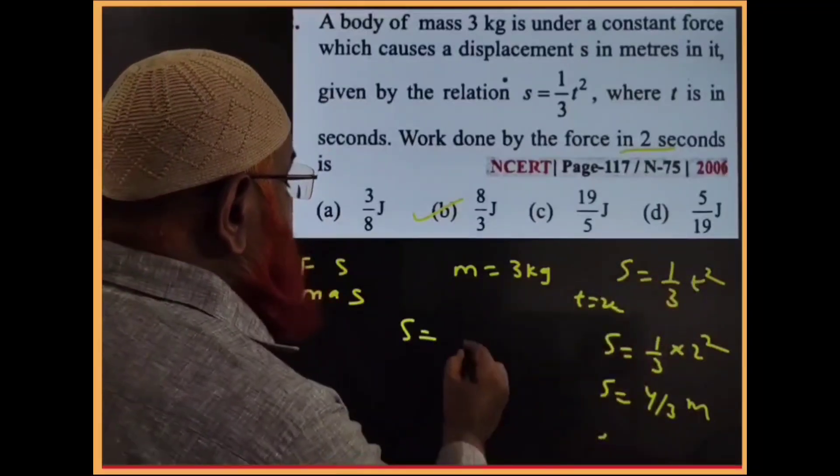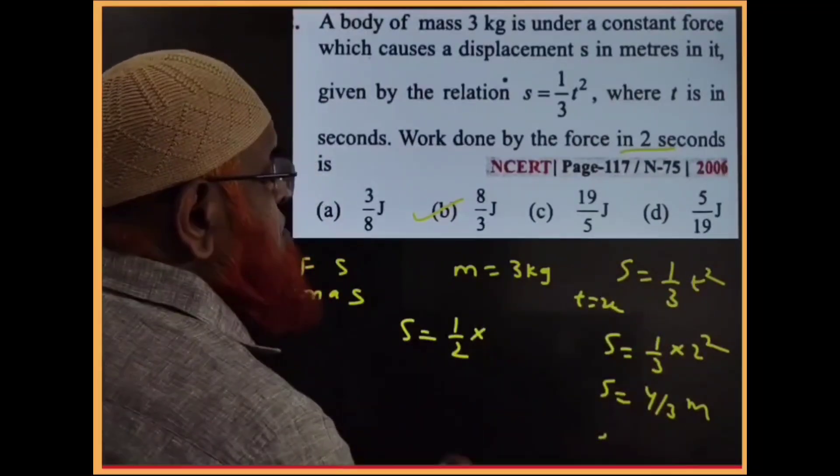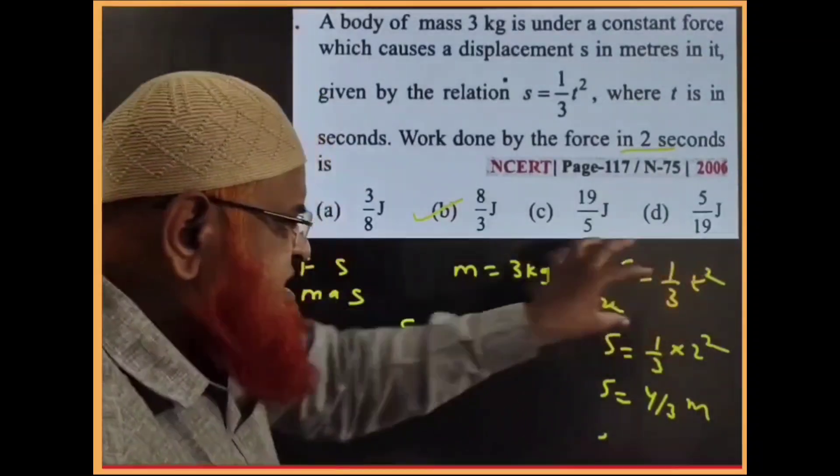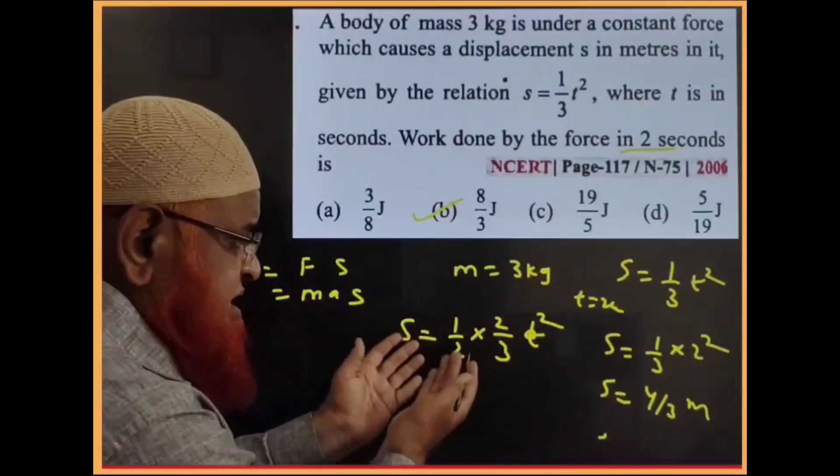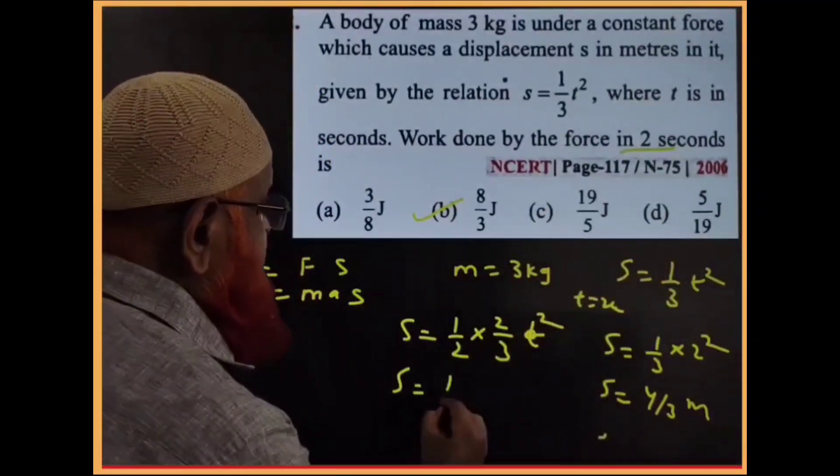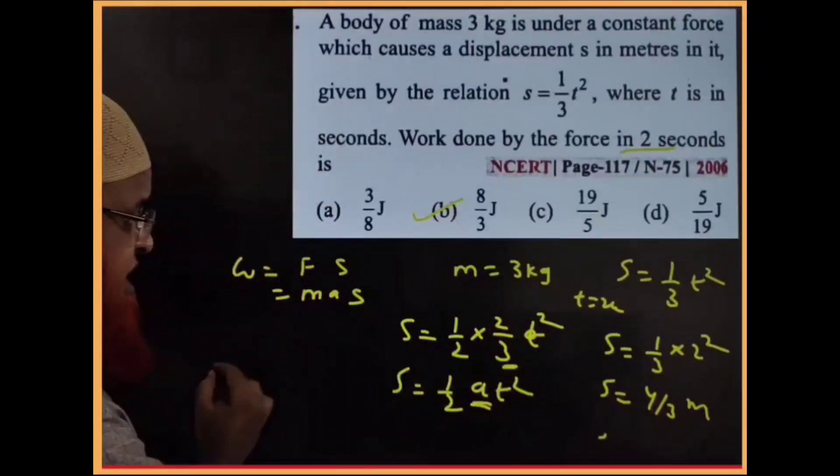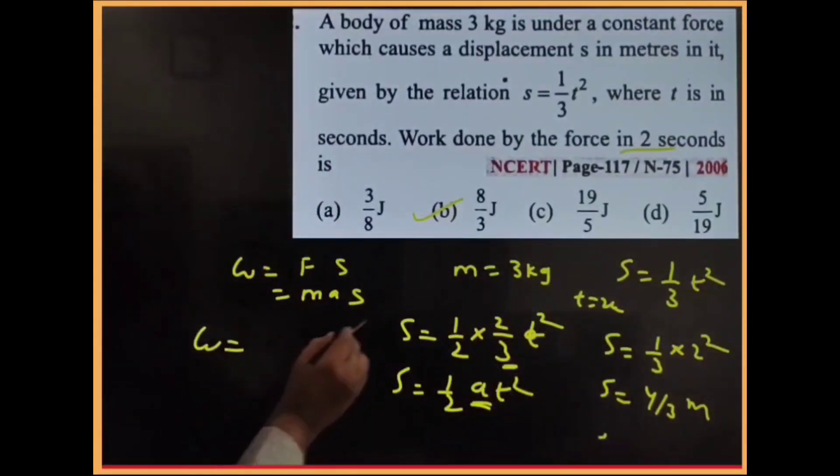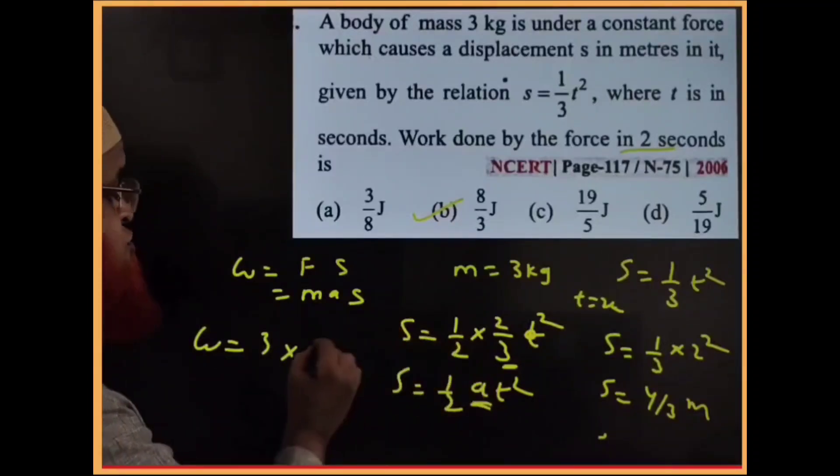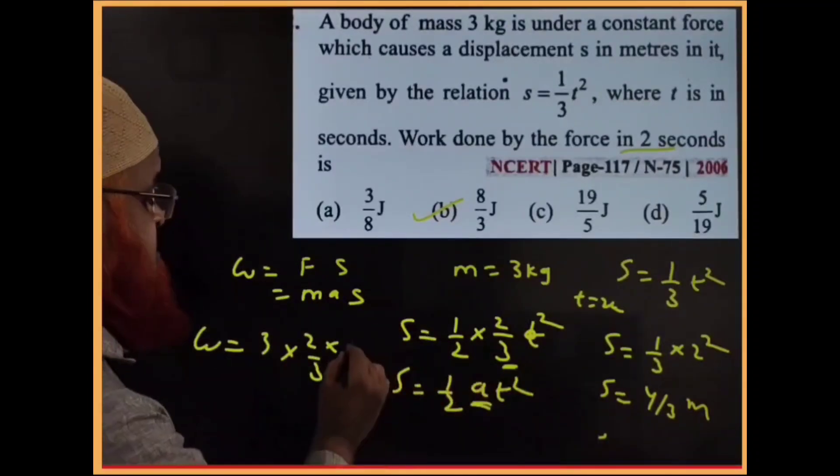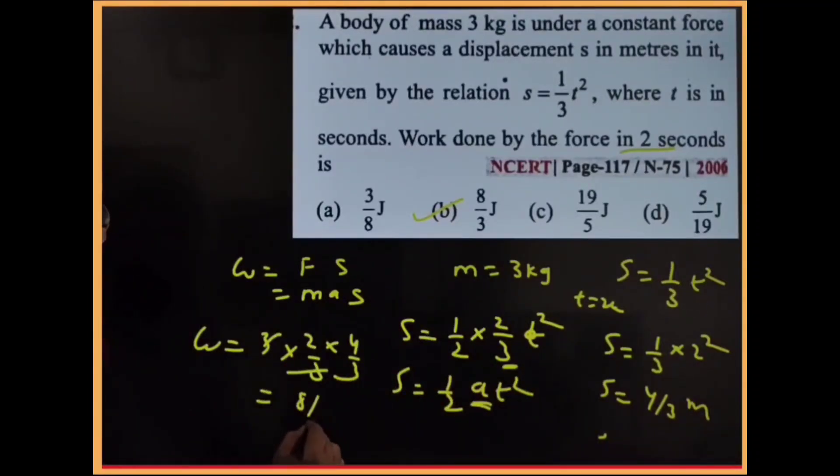So this 1 by 3 t square I will write like this: half into 2 by 3. I am modifying this and writing half into 2 by 3. Because anyhow this will get that one only. Therefore we will write this as half a t square. With this it is understood that a is nothing but 2 by 3 here. You can directly substitute here. W equals 3, a is 2 by 3, and displacement is 4 by 3. If it gets cancelled your answer is 8 by 3 joules. It is a simple method here.